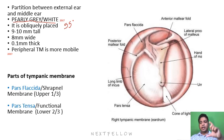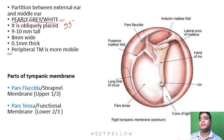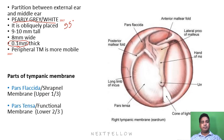What are the dimensions? It is around 9 to 10 mm tall and 8 mm wide. Try to remember it is around 10 mm in that area. The thickness of the tympanic membrane is 0.1 mm.